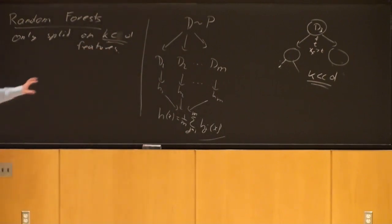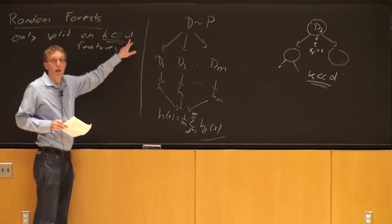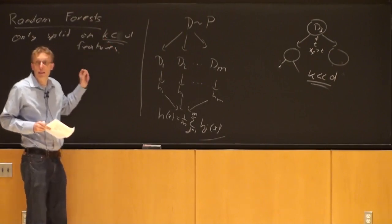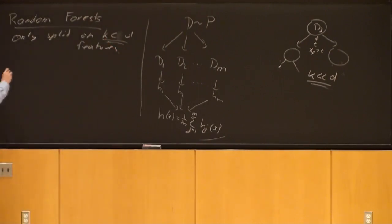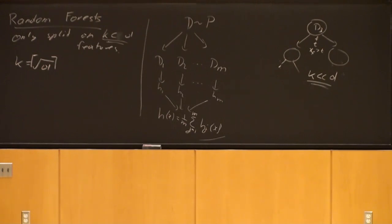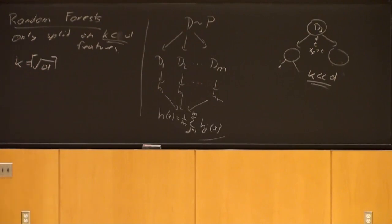Random forests work for any dimensionality. One question is how to set k — it's an additional hyperparameter. It turns out there is a very good justification that setting k to the square root of d, rounded up, works really really well in practice. I've never really seen this fail — you can almost consider it not a hyperparameter at all.